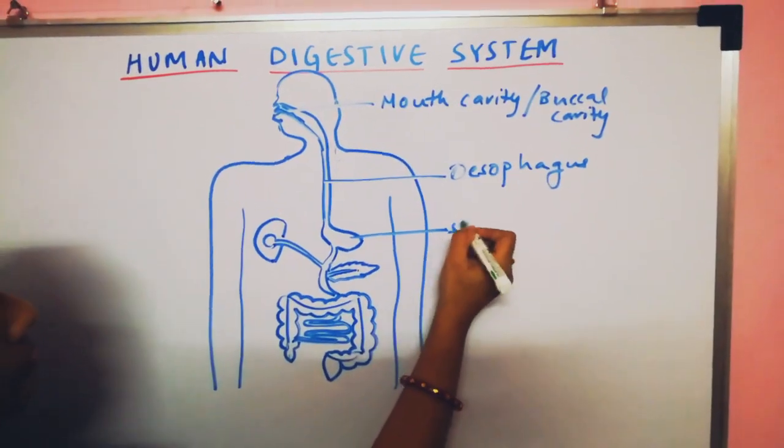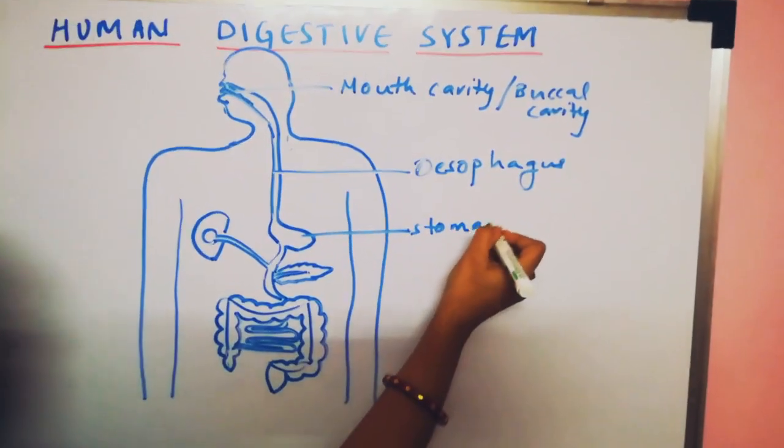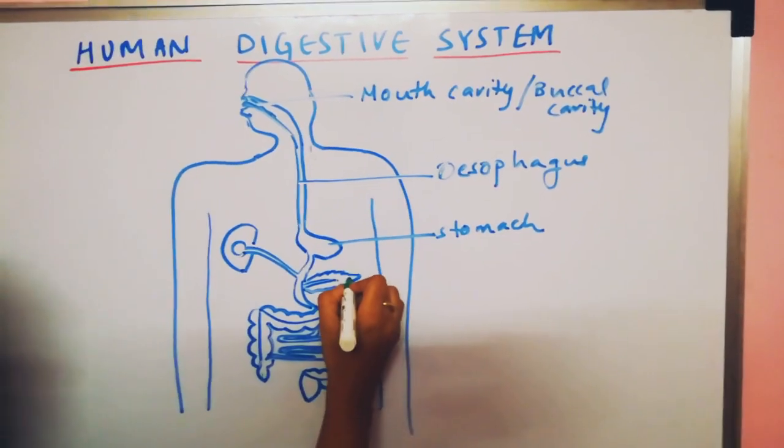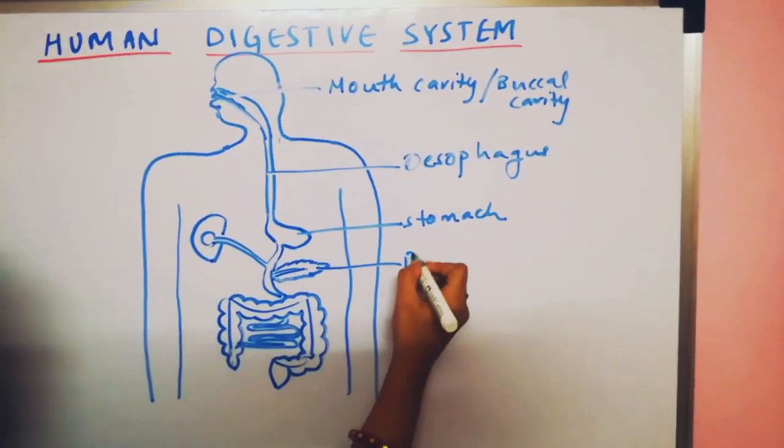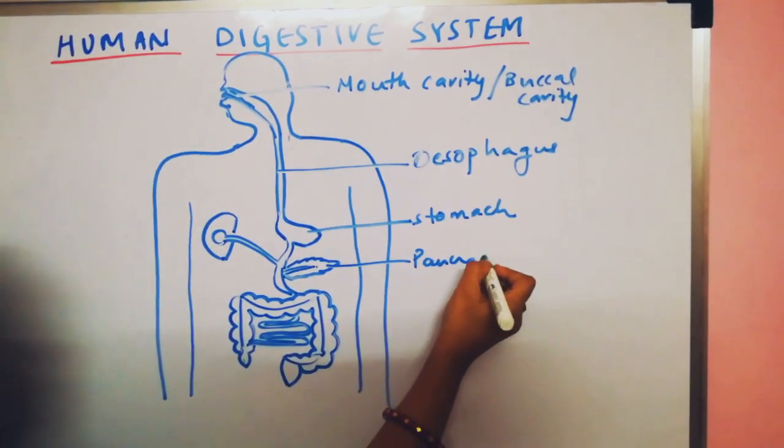The next is stomach. This J-shaped organ. Here, this one is pancreas. Leaf structure.